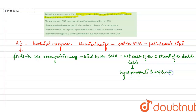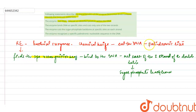Let us check the statements. The first statement says: the enzyme cuts the DNA molecule at the identified position within the DNA. Yes, it finds the specific recognition sequence or palindromic sites and then cuts. So this statement is correct.